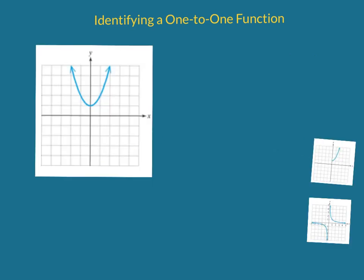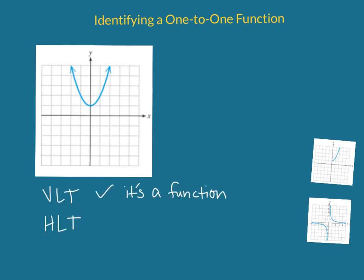Let's determine if this first graph is a one-to-one function. First we need to make sure it is a function — does it pass the vertical line test? Meaning can I draw infinite vertical lines and have each one only hit the graph once? Yes, this is a function. But is it one-to-one? Does it also pass the horizontal line test? If I draw a horizontal line through it, it hits more than once — here and here. Therefore we're not passing the horizontal line test, meaning even though it's a function, it's not a one-to-one function.